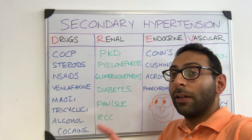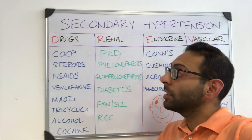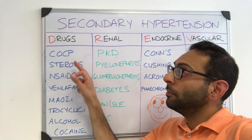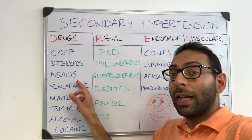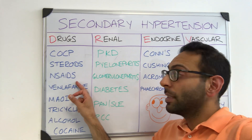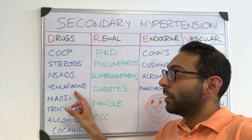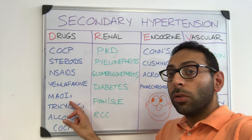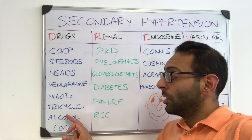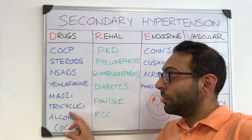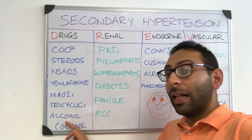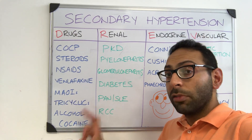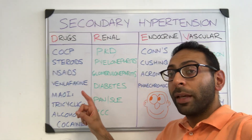Starting with drugs: combined oral contraceptive pill, steroids, non-steroidal anti-inflammatories or NSAIDs, phenylephrine, MAOIs or monoamine oxidase inhibitors, tricyclic antidepressants, and don't forget alcohol and cocaine. There are other drugs as well, but these are some of the common ones.